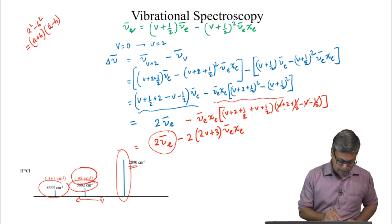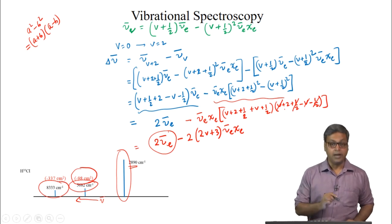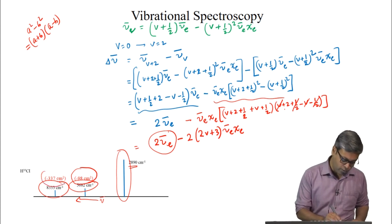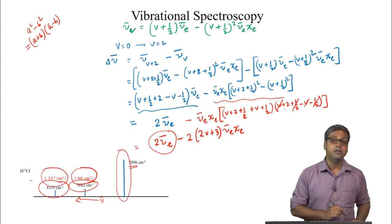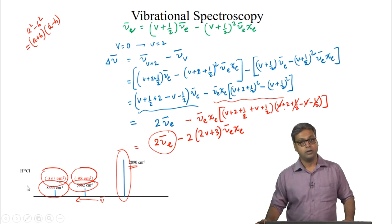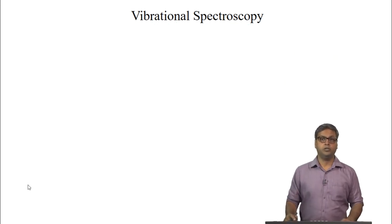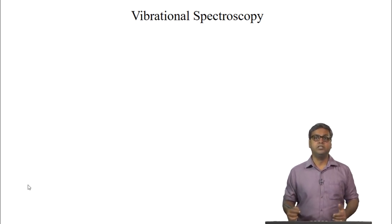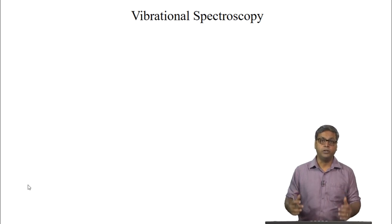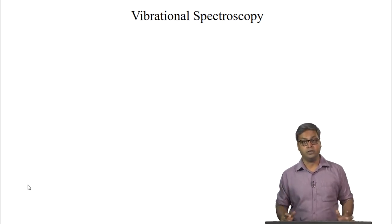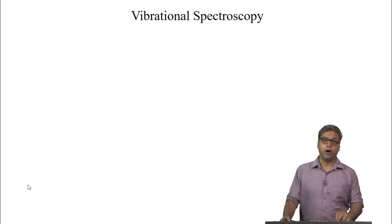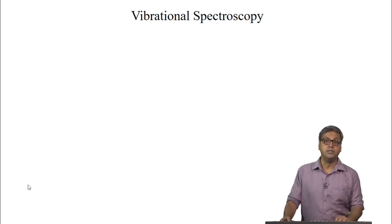The second overtone is at 8333 wavenumbers, off by 337 wavenumbers. Using the known energies from the Morse potential Schrödinger solution, we can use the frequencies of the fundamental and the first overtone to determine the anharmonicity constant for the molecule.